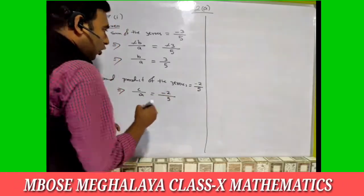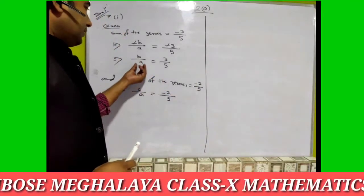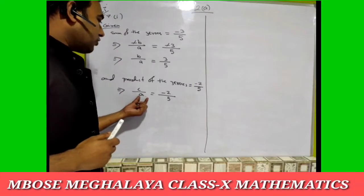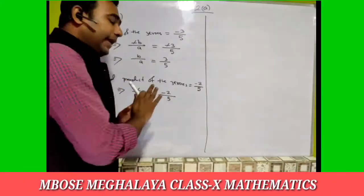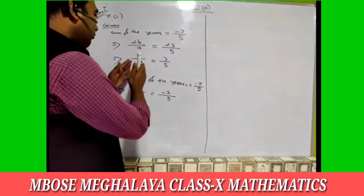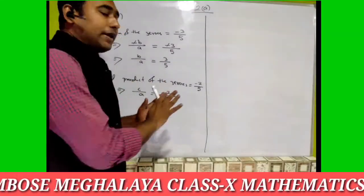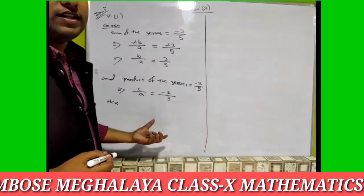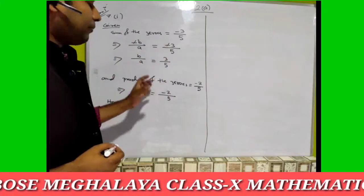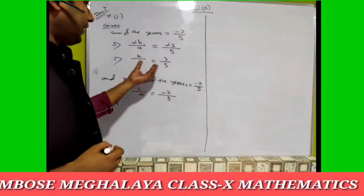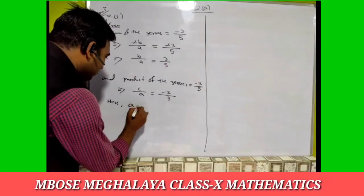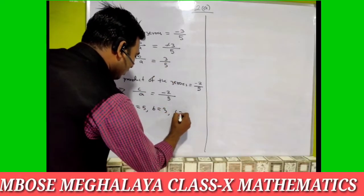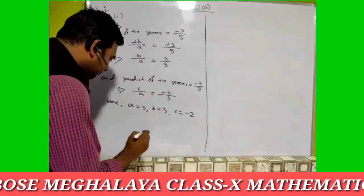Here we just have to check the value of a. In the first case a equals five, and in the second case a also equals five. For both cases, a should be equal — here a equals five in both. So a equals five, b equals three, and c equals minus two.